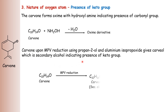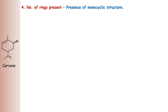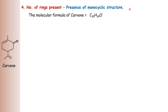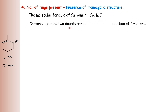The formation of a secondary alcohol indicates that the carbonyl group is in the keto form. Then the next evidence is the number of rings present in carvone. The structure shows that it is a monocyclic structure. We will see how this is proved. The molecular formula of carvone is C10H14O and carvone contains two double bonds.